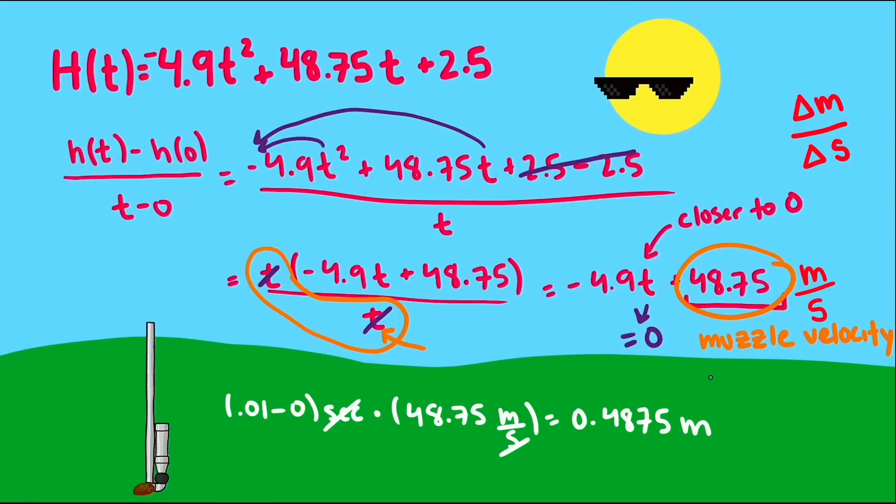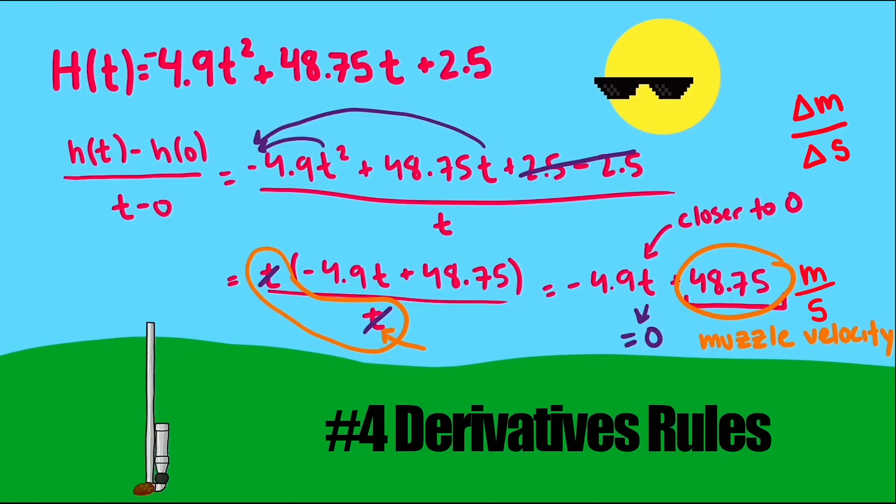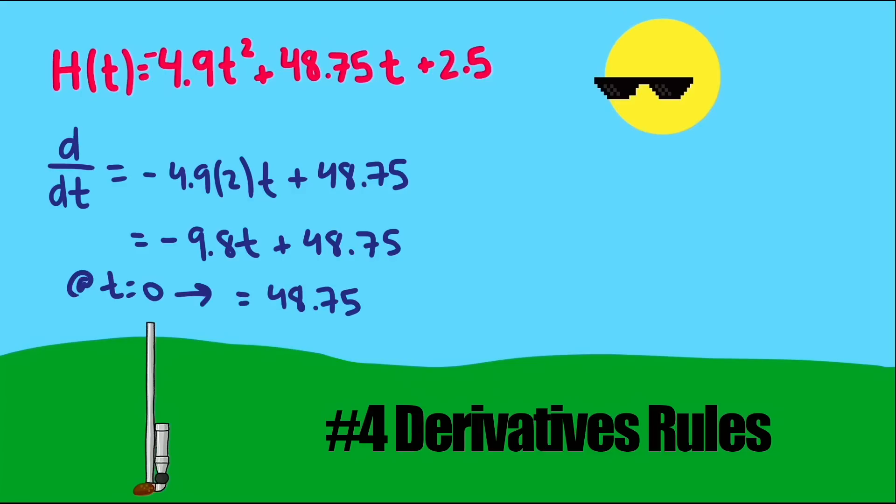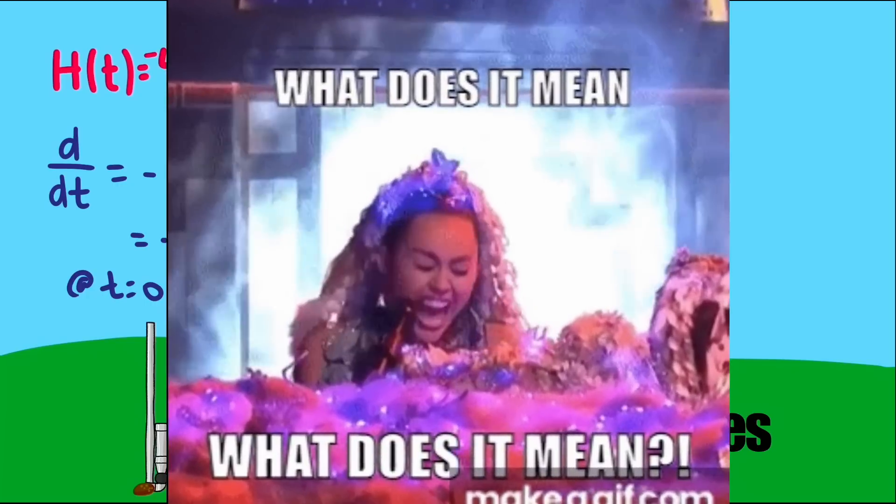The units can help us with the interpretation. If you've had calculus, you probably are very good at meaning number four and remembering derivative rules that would allow us to calculate the derivative at t equals zero very quickly. We can use the power rule, plug in t equals zero, and get 48.75.